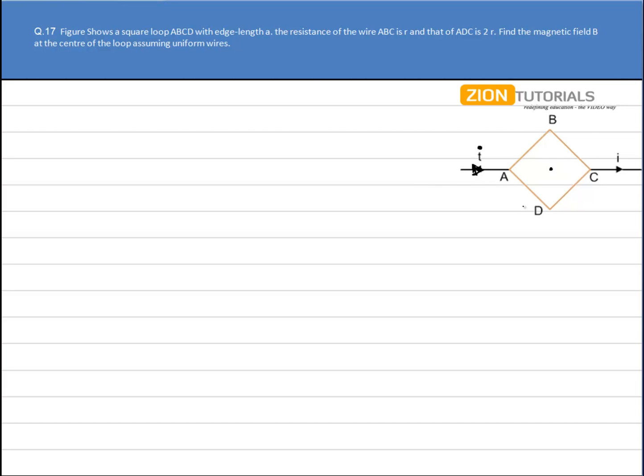We have an edge length of A, so the perpendicular distance will be A by 2 and the distance from each of the vertices is A by root 2. Now we have to calculate the magnetic field at the center, but before that we have to calculate the current flowing through ABC and ADC.